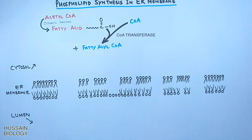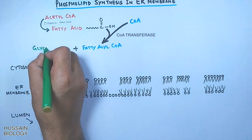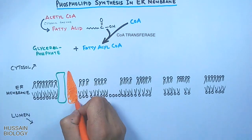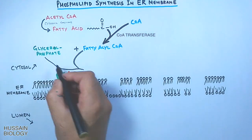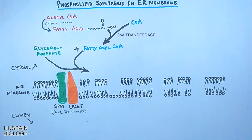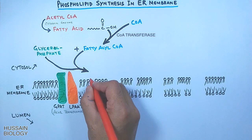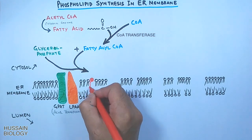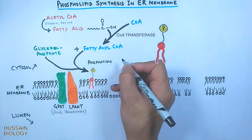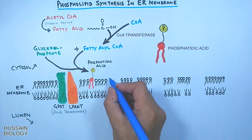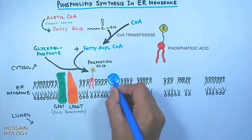In the next step, glycerol phosphate adds to the fatty acyl CoA, and this reaction is catalyzed by acyltransferases — shown in the membrane as GP80 and LPA80. From this reaction we get phosphatidic acid.